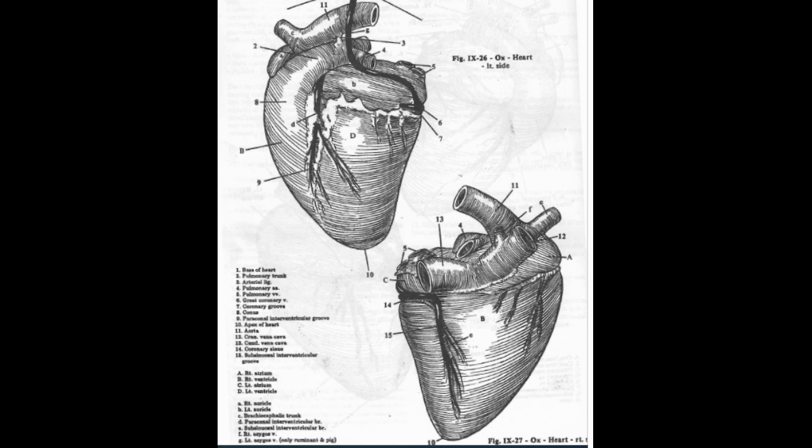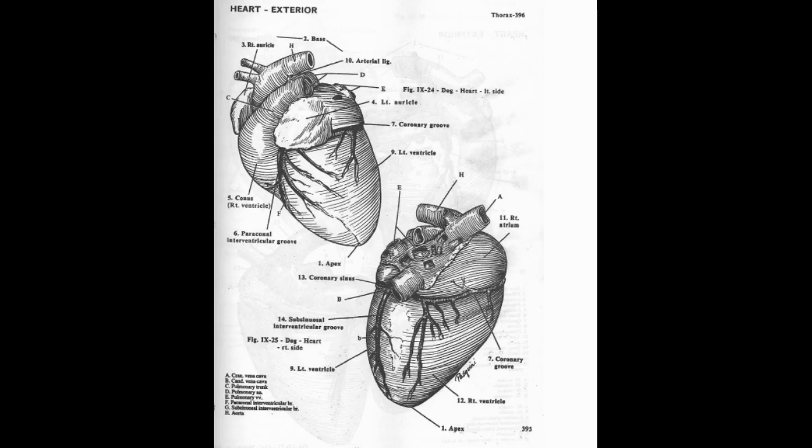On the right side of the heart, both cranial and caudal vena cava can be seen entering the right atrium, and therefore the right side is called the atrial surface. Right and left atria are clearly visible on the right side, while right and left auricles are clearly visible on the left side.